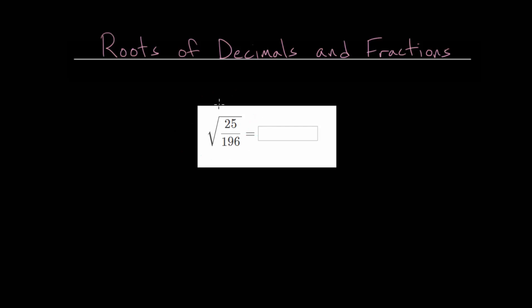So what number multiplied by itself gives us 25 divided by 196? And when you have a fraction, essentially you can take the square root of the numerator and then divide it by the square root of the denominator. So we could write it generally where if we have the square root of a over b, that this is simply the square root of a divided by the square root of b.